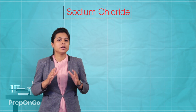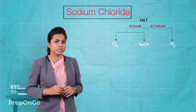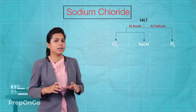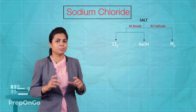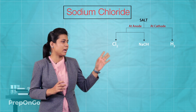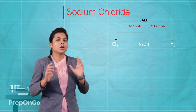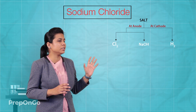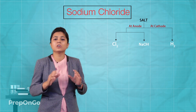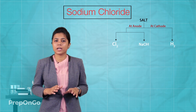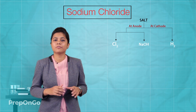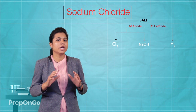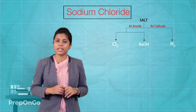Chlorine gets deposited at the anode and hydrogen is deposited at the cathode. Sodium hydroxide gets deposited near the anode. All three products formed during the process are useful in our daily life.